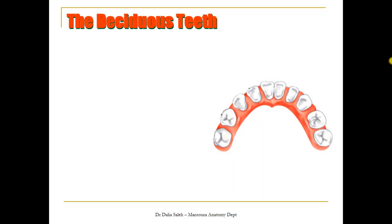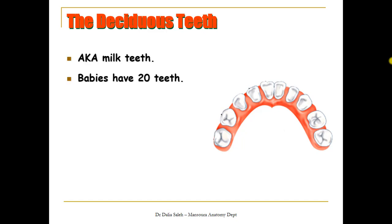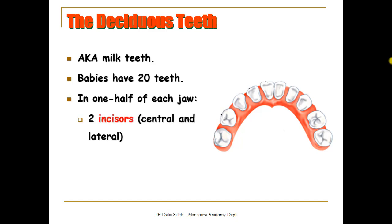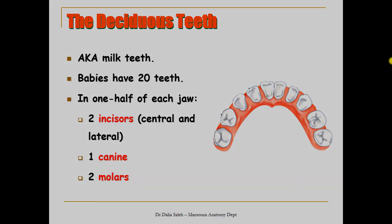In babies, we have what are called deciduous teeth, or temporary teeth, or milk teeth. They are 20 in number. In each half of each row, we have central and lateral incisors, one canine, and just two molars — first and second.